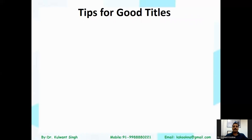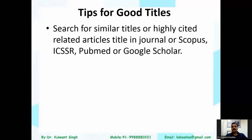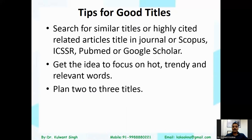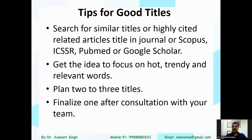A few tips for good titles: search for similar or highly cited related article titles in databases like Scopus, ICSSR, PubMed, or Google Scholar. This is one of the best practices to find better titles and get ideas on hot, trendy, or relevant words. Plan two or three titles for your manuscript, then finalize one after consulting with your team, supervisor, mentor, or senior researchers.